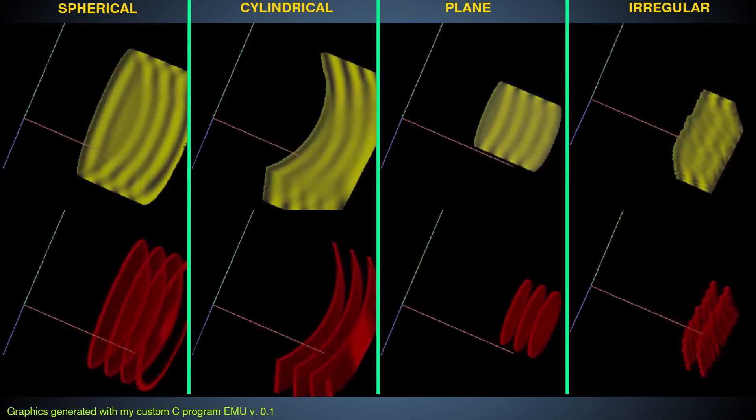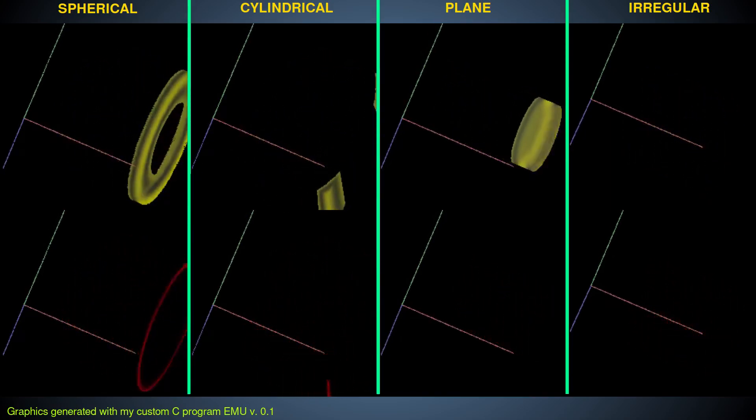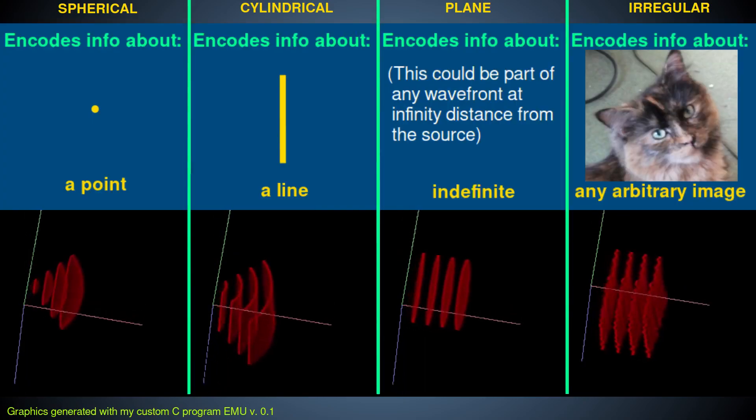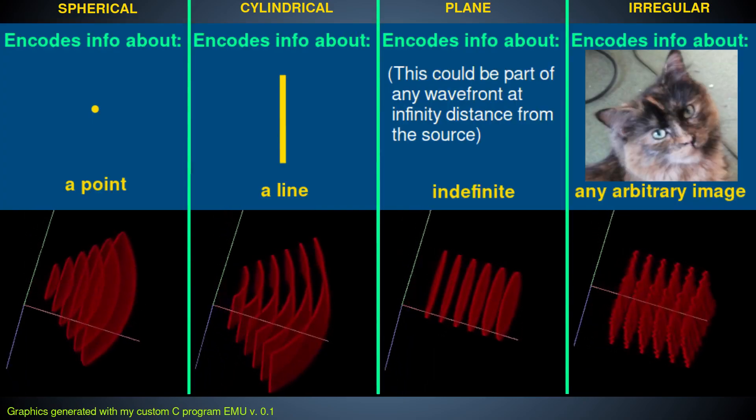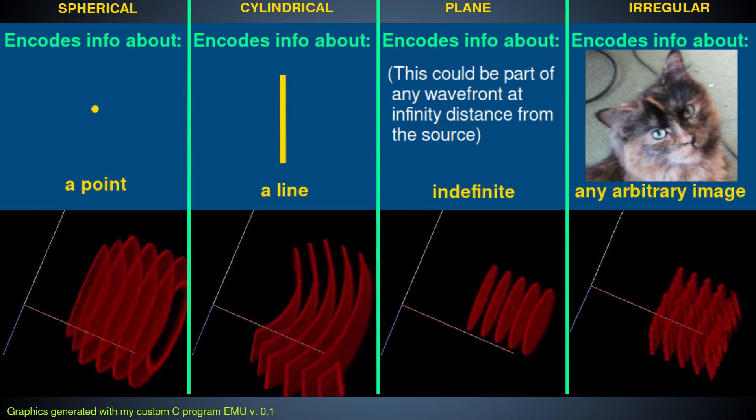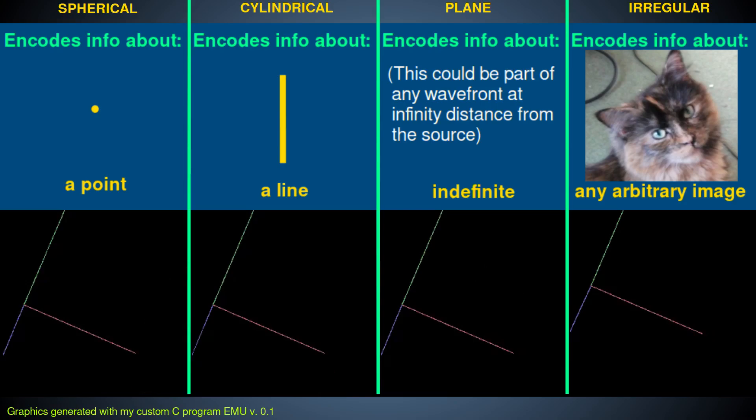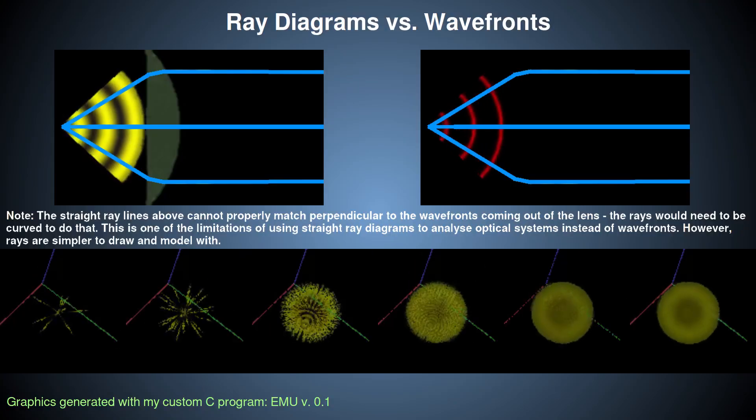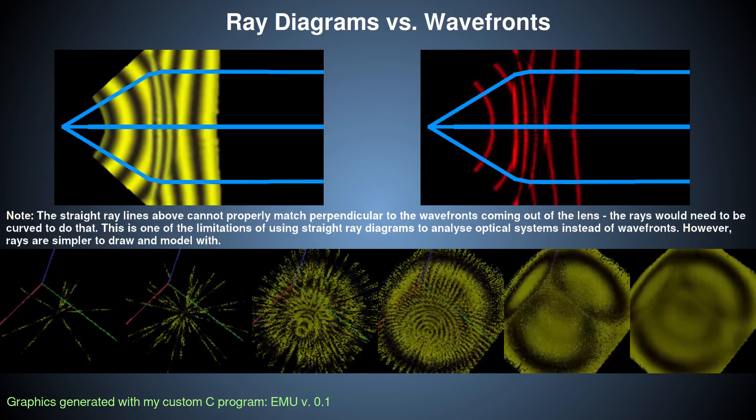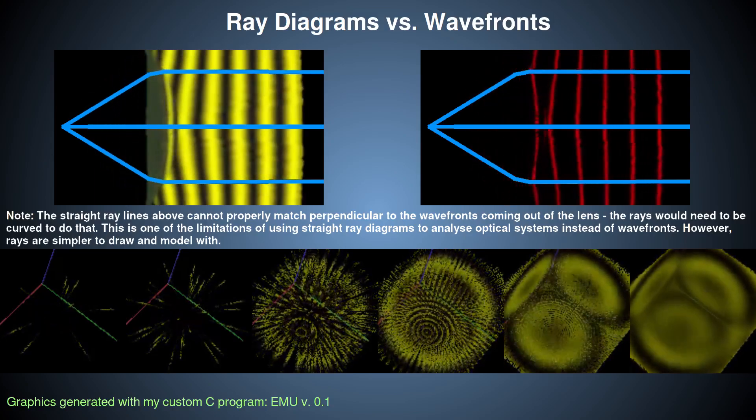Wave fronts can come in many different shapes, including spherical, cylindrical, plain, or irregular. Note that we can represent EM fields by either rays or wave fronts. Rays are always perpendicular to wave fronts.